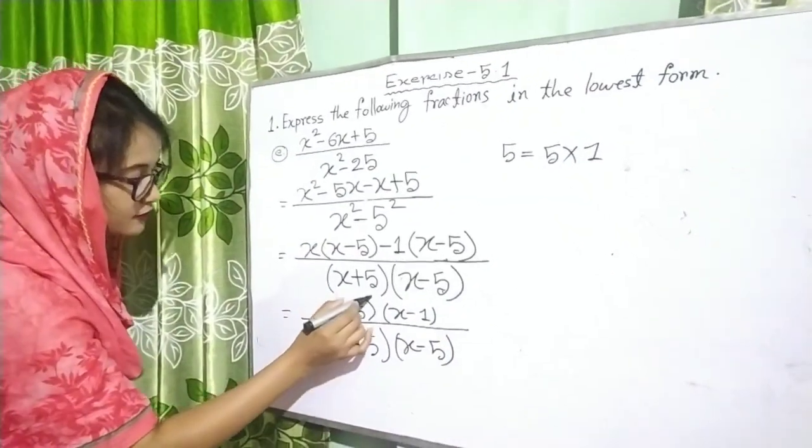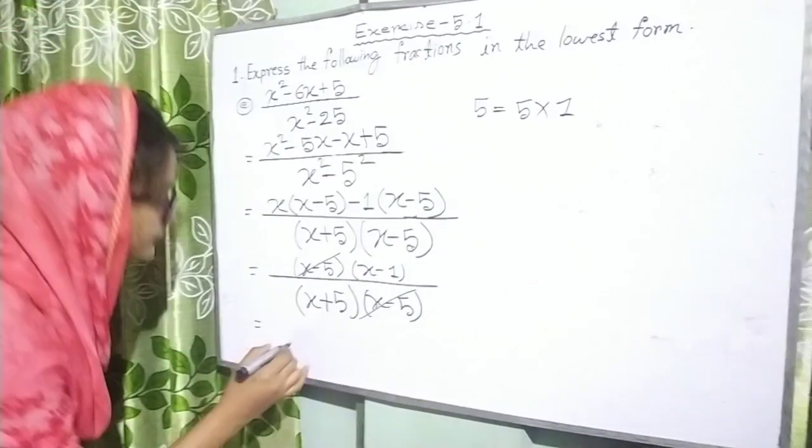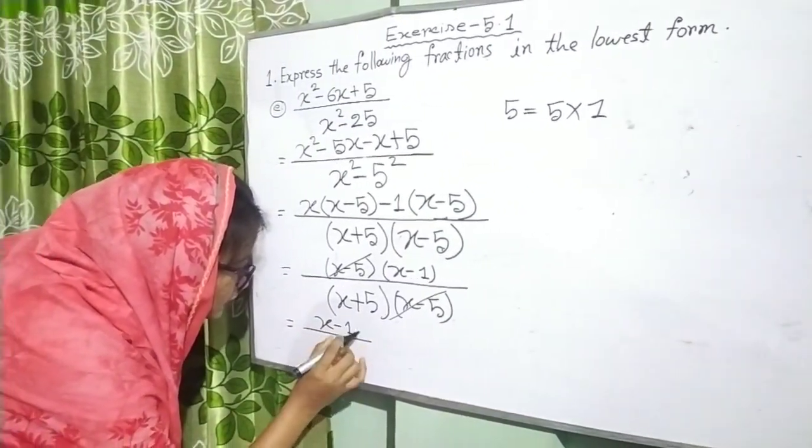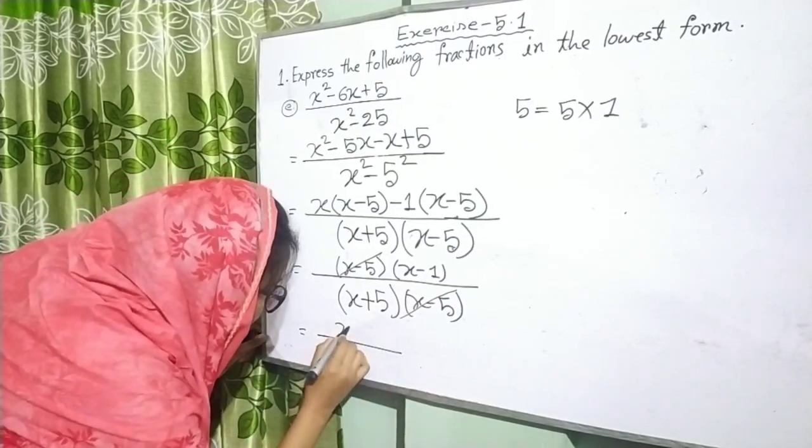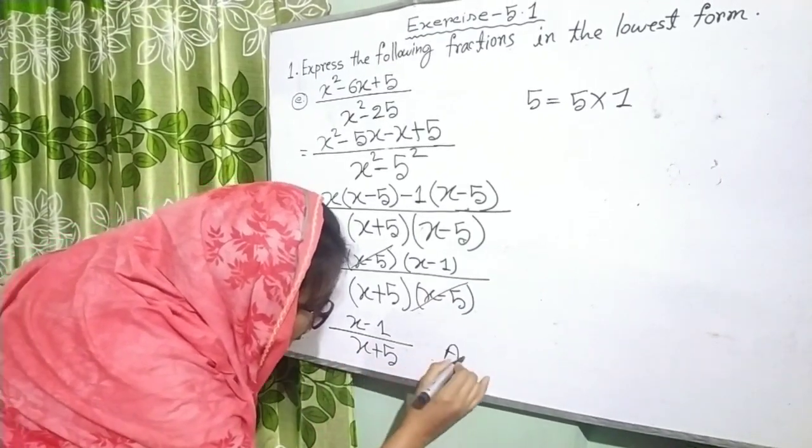Here x minus 5 and x minus 5... x minus 5 can be cancelled. Our result is x minus 1 divided by x plus 5. That is our answer.